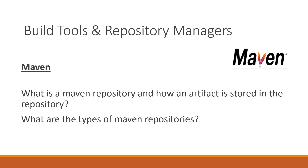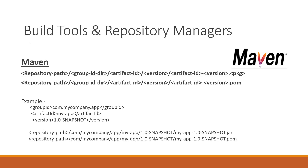So how is the artifact stored in the repository? Generally, when we have an application with a pom.xml, the pom.xml will have groupId, artifactId, version, and packaging. When we build the artifact with that pom.xml, the corresponding artifact will be stored in a location in the repository. The location will be: repository path / groupId directory / artifactId / version / artifactId-version.packaging.